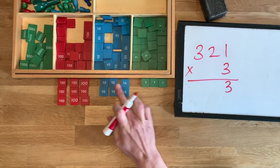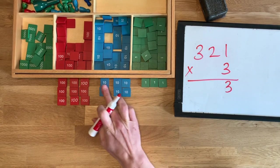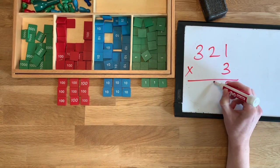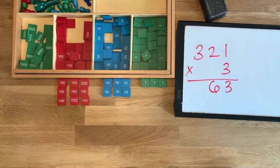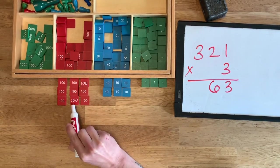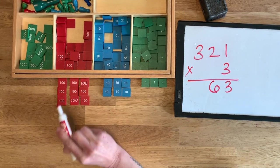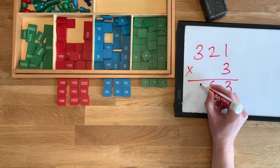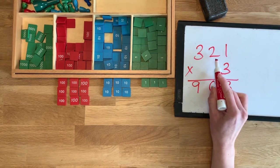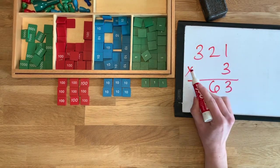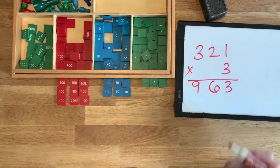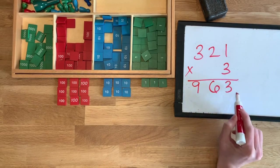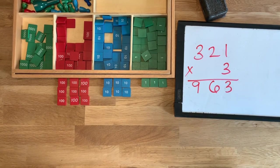So let's start with our units: one, two, three. Two, four, six — there's six tens. And there's one, two, three, four, five, six, seven, eight, nine hundreds. So 321 times 3 is 963.